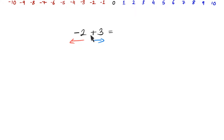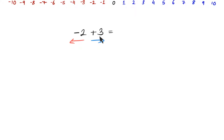This means that my final answer will be a positive. Now, because they are in opposition — moving in opposite directions — all I need to do is work out the difference, subtract them. The larger number take away the smaller number. What's 3 take away 2? Well, 3 take away 2 is clearly 1. So my answer is positive 1.